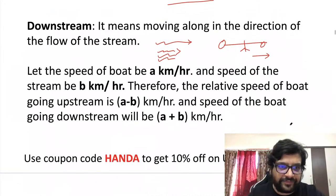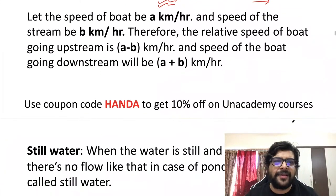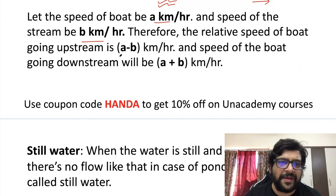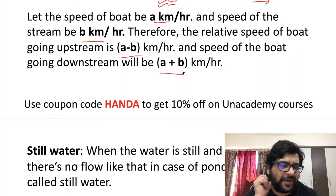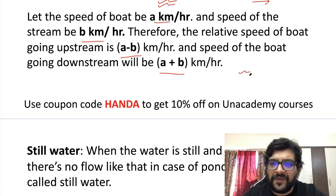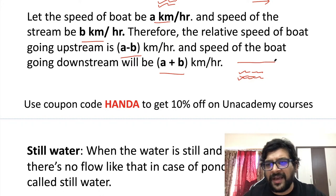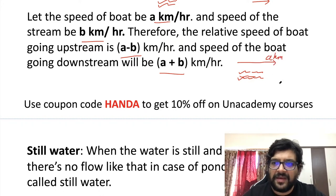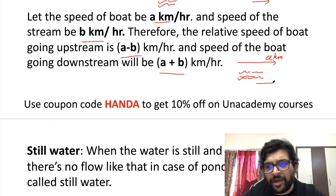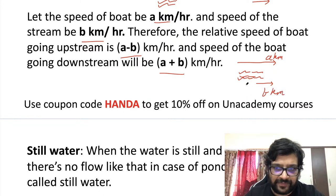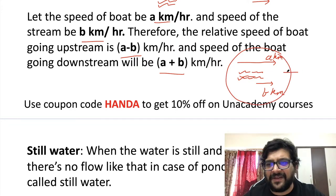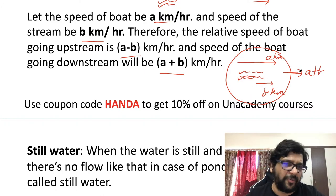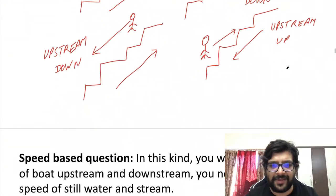Now the most common formulas: suppose the speed of the boat is A and the speed of the river is B. When going upstream, your effective speed will be A minus B, and when going downstream it will be A plus B. The logic: in still water, in one hour you'd go A kilometers. If the boat was not moving on its own, the water flow would carry it B kilometers. So effectively going downstream, it goes A plus B kilometers per hour.